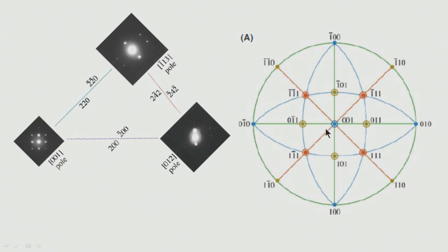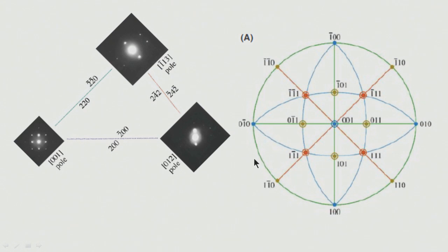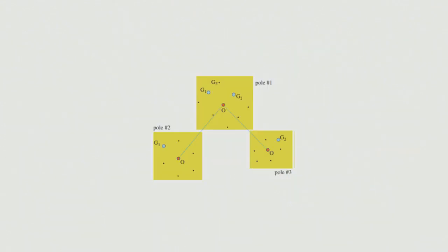This is the 001 stereographic projection for a cubic system. The stereogram tells the angular relationship between the various planes and can be used to decide which direction to tilt: tilting in one direction will bring us to the 1̄13 zone axis, while tilting in another direction will bring us to the 012 zone. The stereogram can thus be used to consistently index the diffraction pattern.